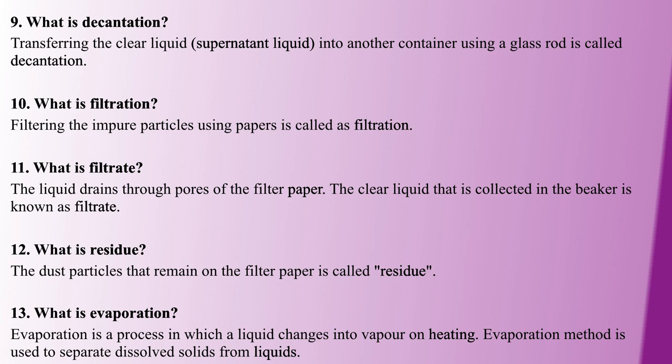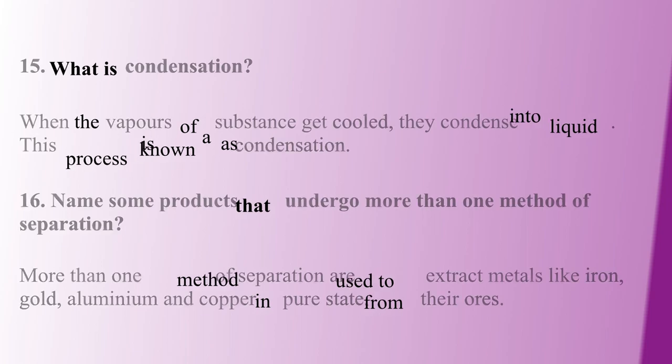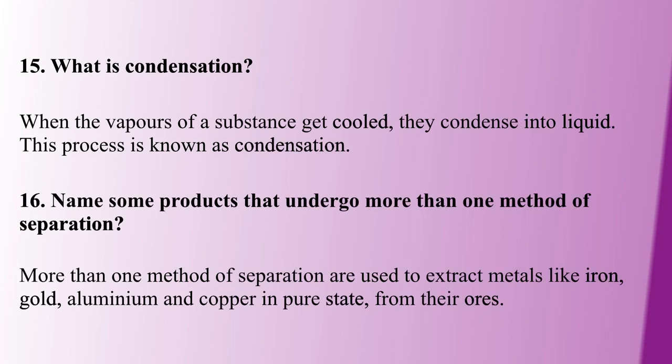Next process is evaporation. We know that liquid is converted to vapor by a heating process. This method is used to separate soluble substances from liquids. Next, condensation: vapors are cooled to form liquid. Condensation is the opposite of evaporation.